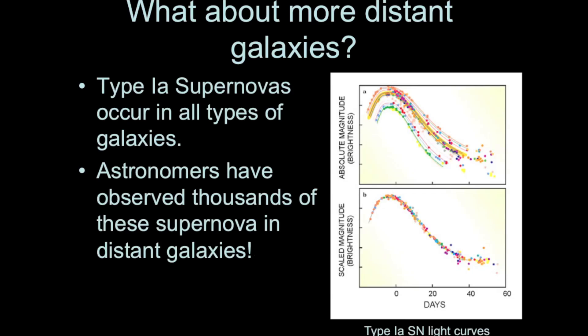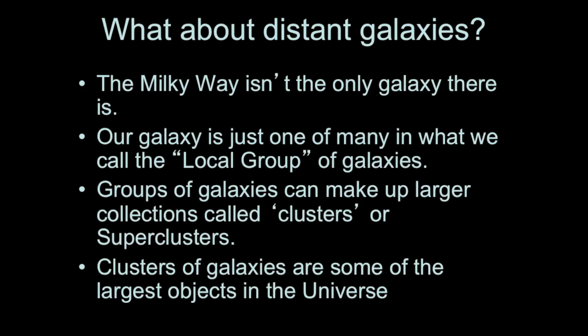Astronomers have now observed thousands of supernovae in distant galaxies, allowing us to get accurate distances to galaxies millions and in some cases billions of light years away. It turns out the Milky Way is part of a local group of galaxies, and groups of galaxies can make up clusters or even superclusters. These clusters of galaxies are some of the biggest objects in the universe.